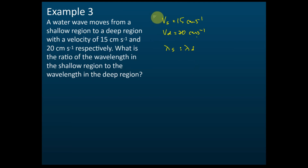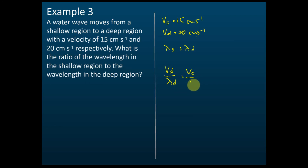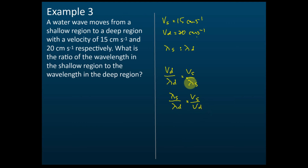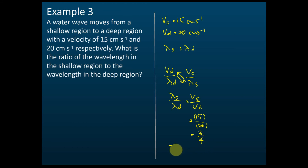From the equation, vd over lambda d equals vs over lambda s. Rearranging, we move lambda s to the left and vd to the right: lambda s over lambda d equals vs over vd. Substituting, vs equals 15 and vd equals 20. Simplifying gives 3 over 4. So lambda s to lambda d equals 3 to 4.